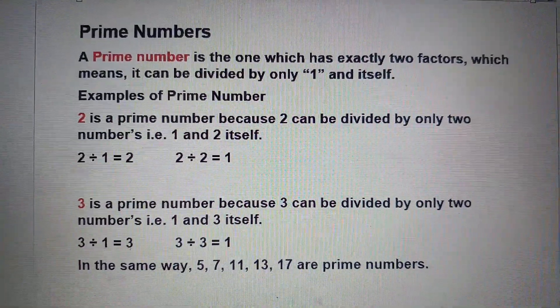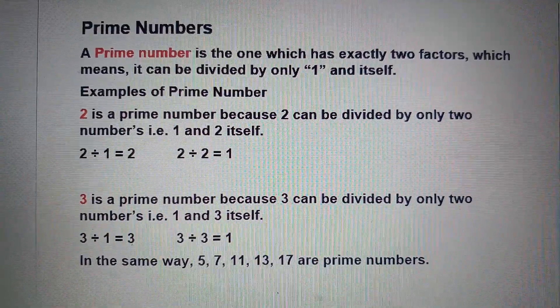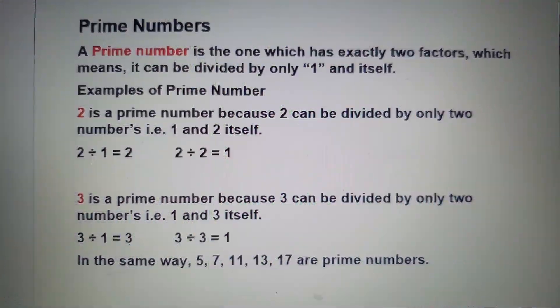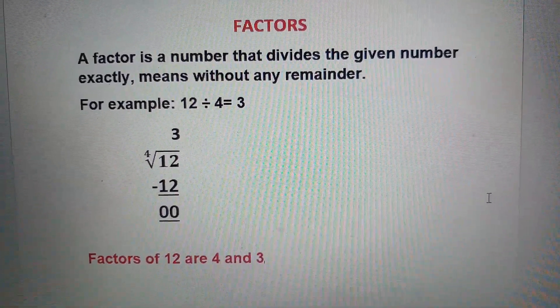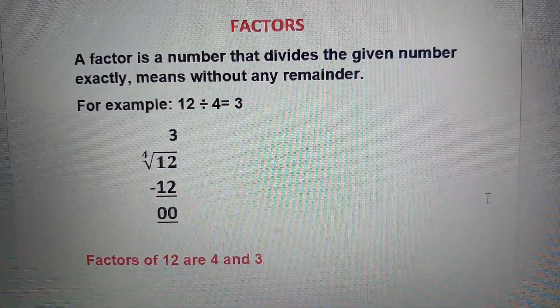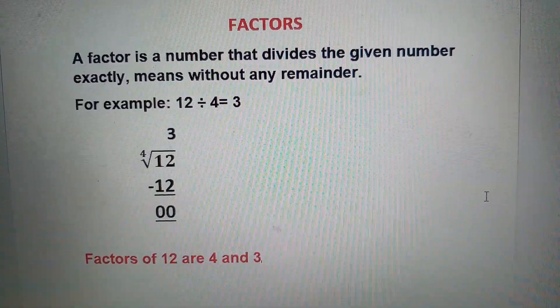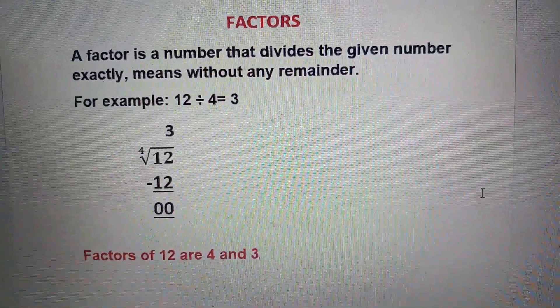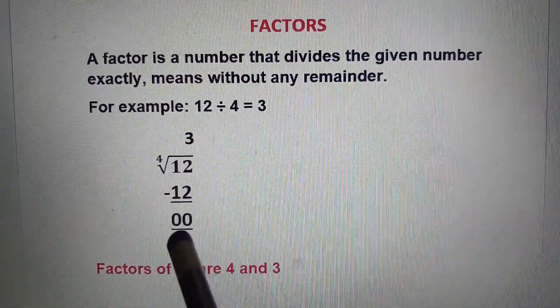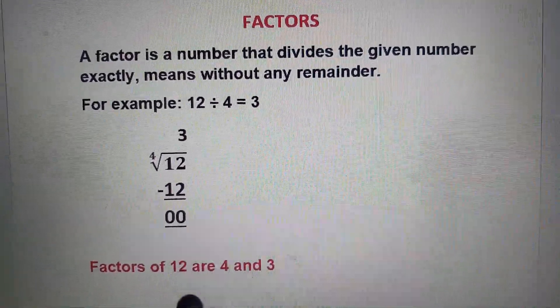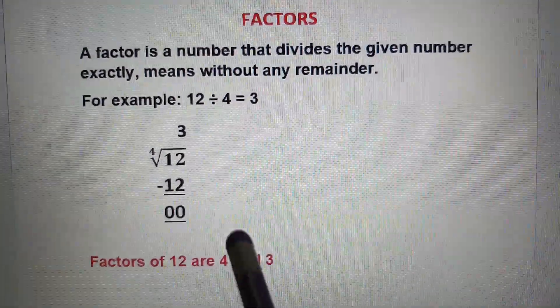A number that has exactly two factors is called a prime number. Here the term factors means when we divide two numbers and we get zero as remainder, then the quotient and the divisor are called the factors of the number. Here we have divided 12 by 4 and we are getting zero as remainder, therefore we can say that 4 and 3 are the factors of 12.